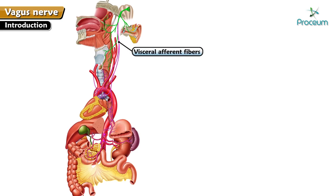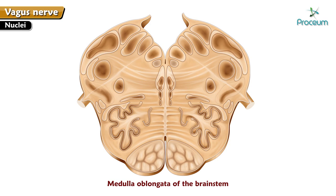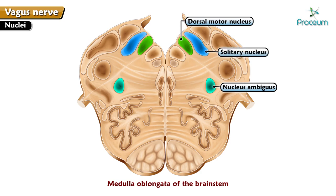Visceral afferent fibers are responsible for perceiving sensory input, with the exception of pain, from the viscera or internal organs. Within the medulla oblongata of the brainstem, there are four vagal nuclei onto which the axons of the vagus nerve emerge from or converge onto. These include the dorsal motor nucleus, the nucleus ambiguus, the solitary nucleus, and the spinal trigeminal nucleus.